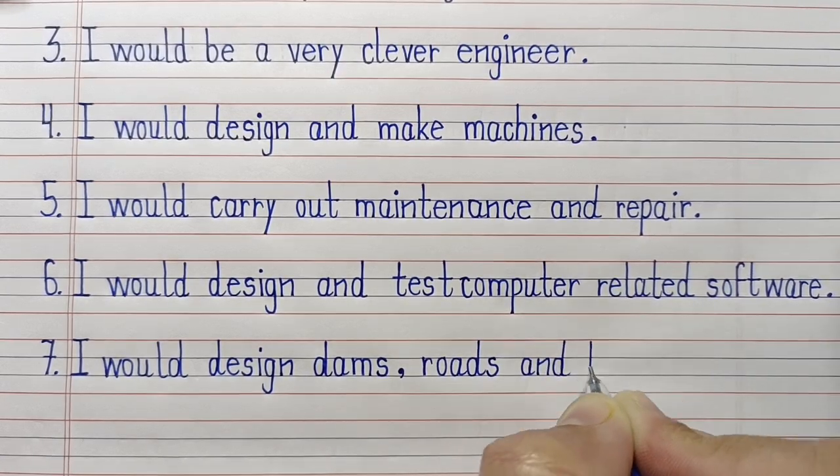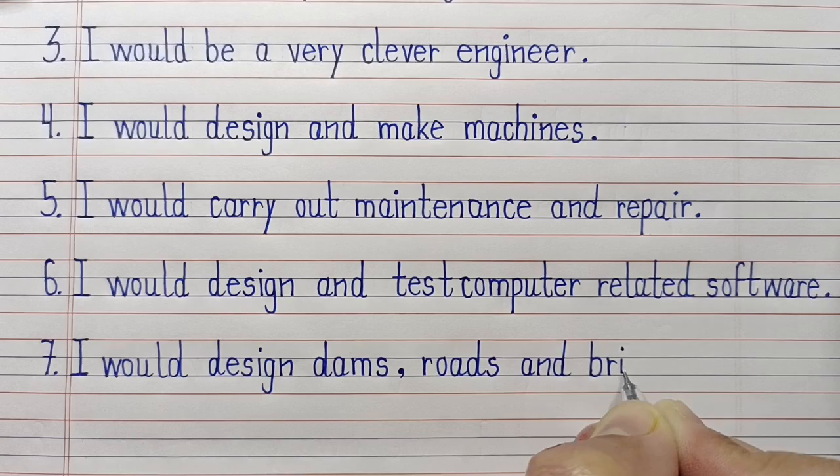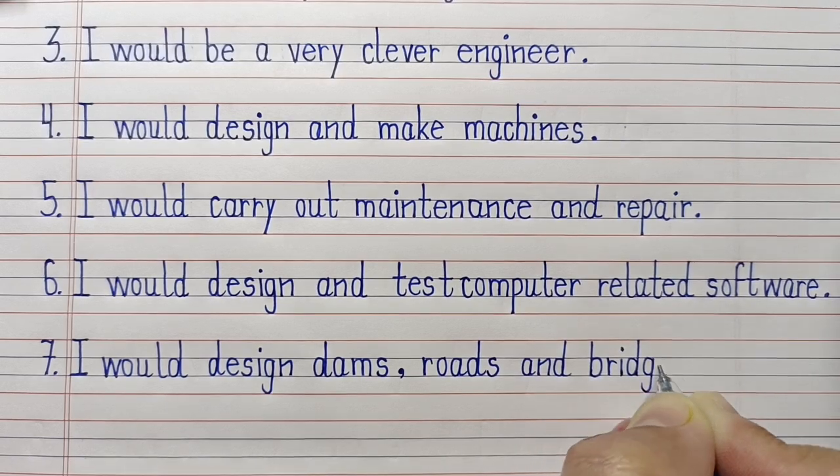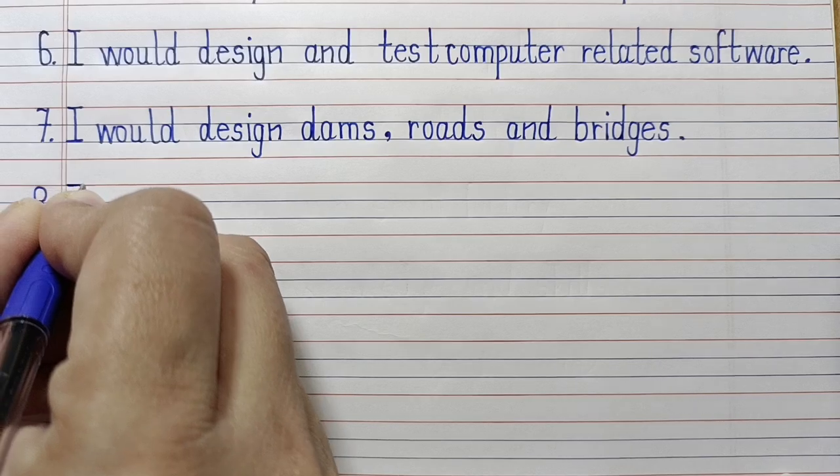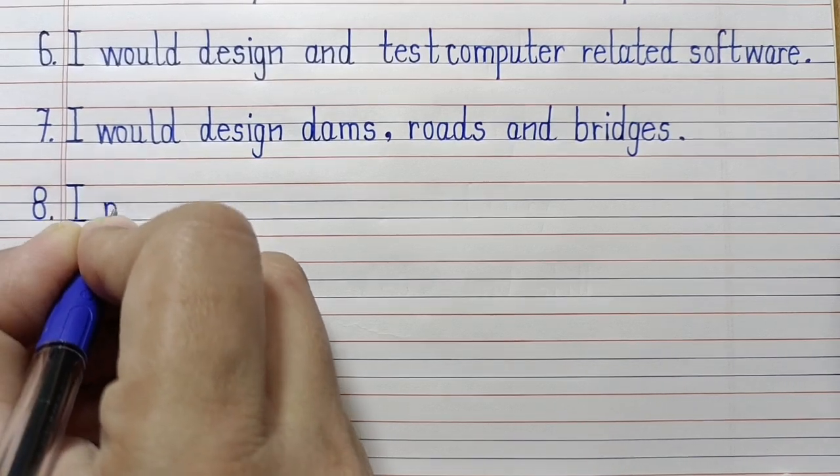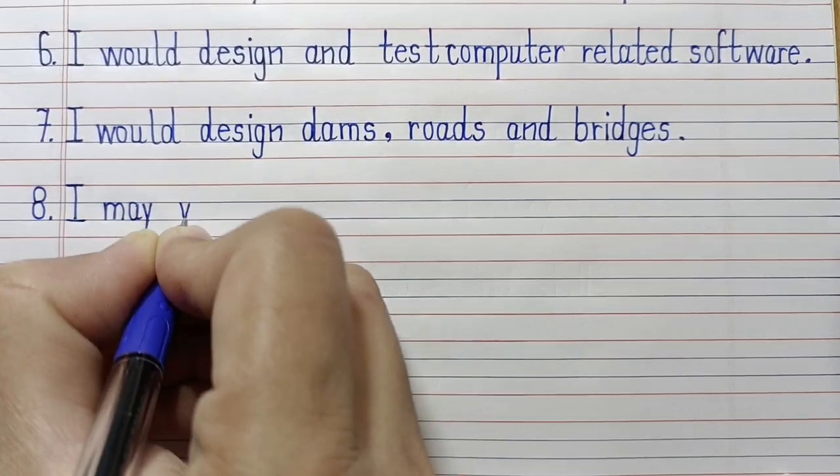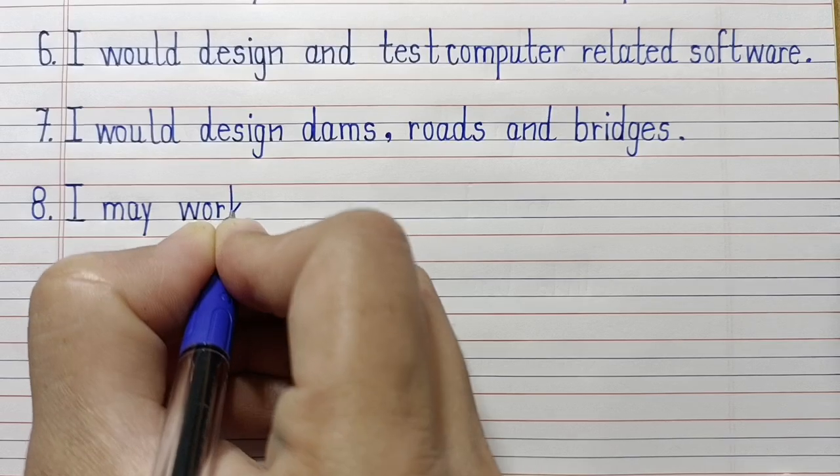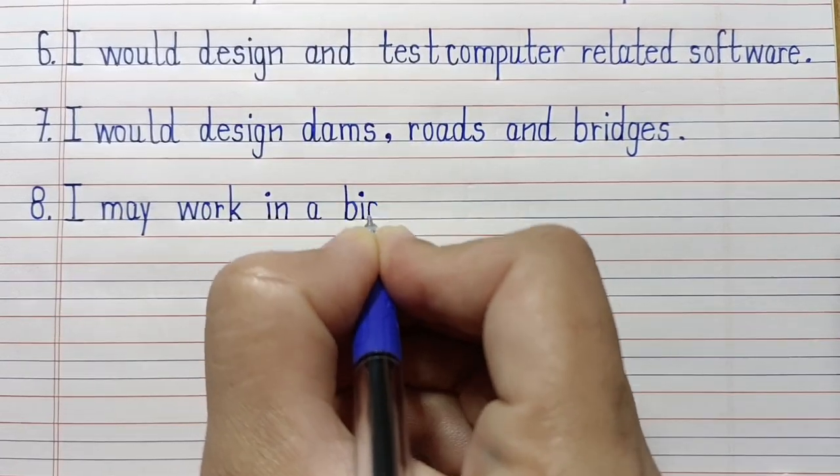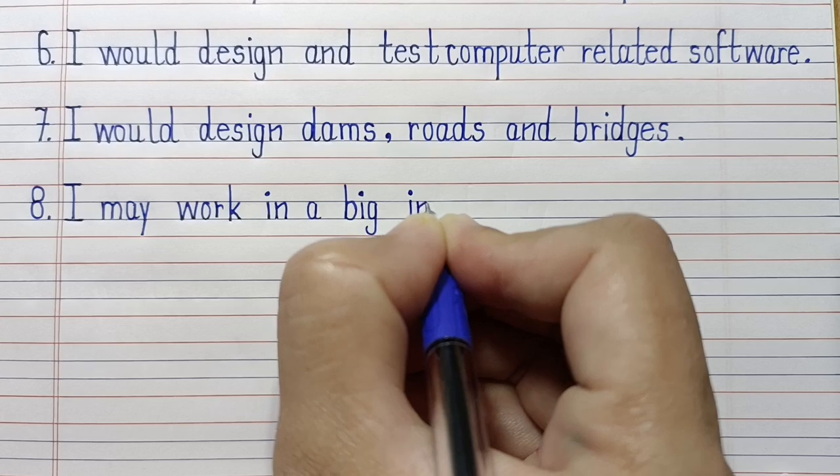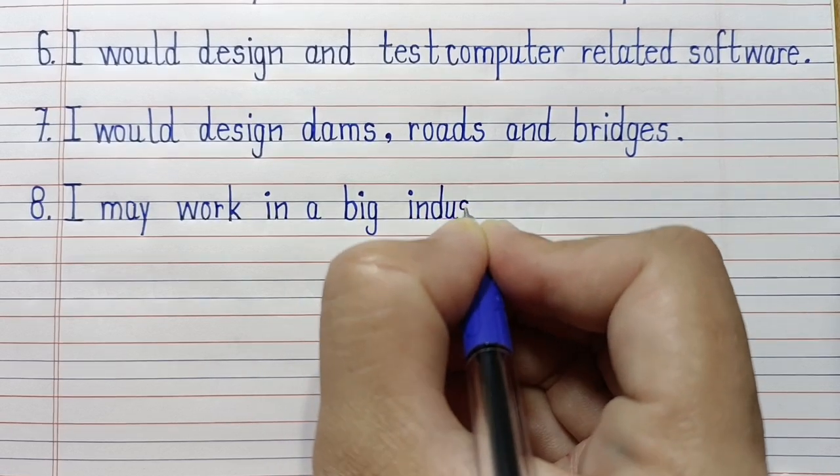Seventh line: I would design dams, roads and bridges. Eighth line: I may work in a big industry.